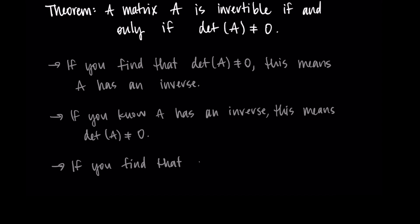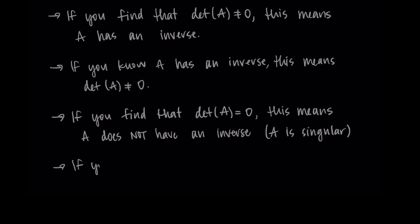This also works for the converse statements. So if we find that the determinant of A is equal to zero, this will tell us that A cannot have an inverse. So A would be singular. Moreover, if you know that A doesn't have an inverse, it's not invertible, then this must mean that the determinant is equal to zero.